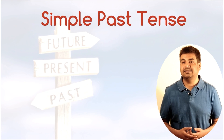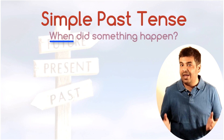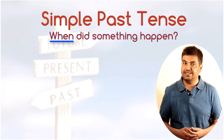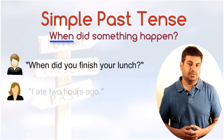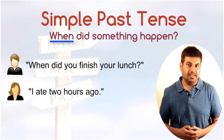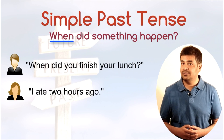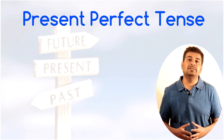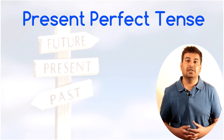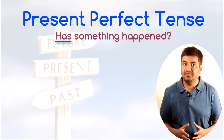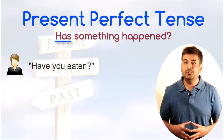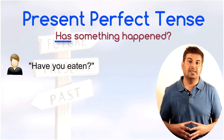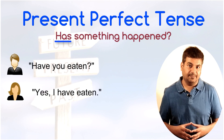The simple past tense answers the question: when did something happen? For example, to the question 'When did you finish your lunch?' the answer can be 'I ate two hours ago.' On the contrary, the present perfect tense answers the question: has something happened? For example, to the question 'Have you eaten?' the answer can be 'Yes, I have eaten.'